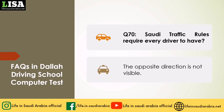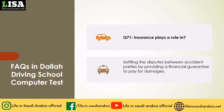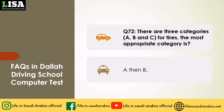Q68: What to do when you see injured persons in a car? Answer: Do not remove them unless the car is burning. Q69: Most running-over accidents affecting pedestrians occur at sunset or during the night because of? Answer: Low visibility. Q70: Saudi traffic rules require every driver to have? Answer: A third party or comprehensive insurance. Q71: Insurance plays a role in? Answer: Settling the disputes between accident parties by providing a financial guarantee to pay for damages. Q72: There are three categories A, B, and C for tires — the most appropriate category is? Answer: A, then B, then C.